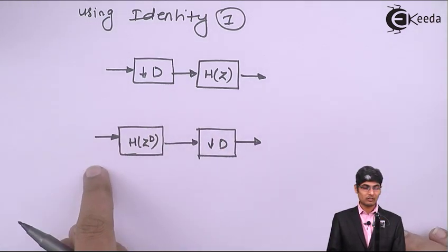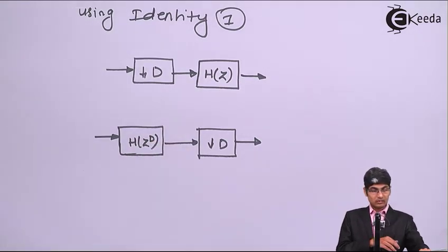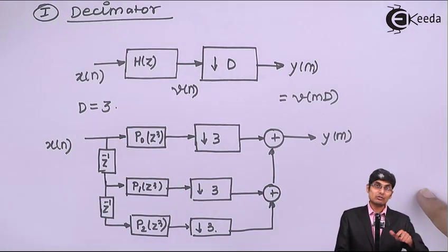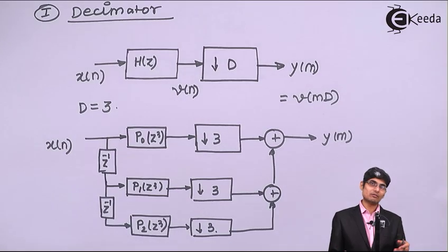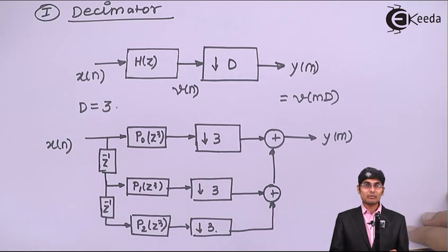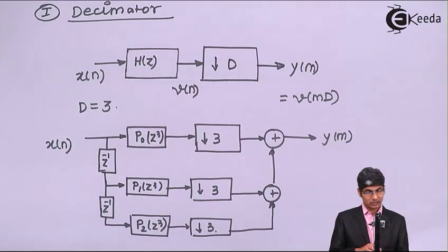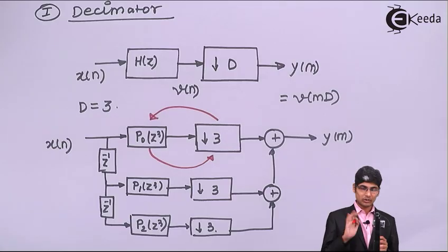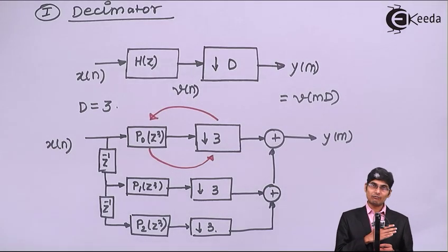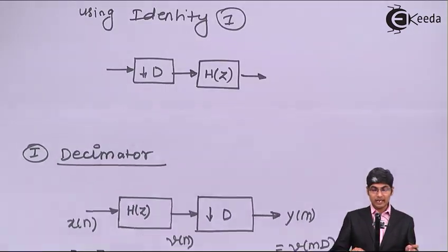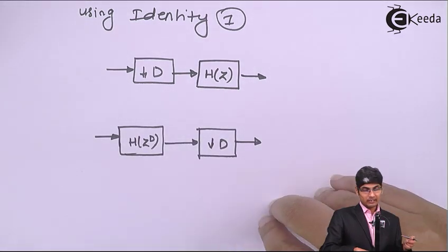Our case has H(z^D) followed by down-sampled by D. The polyphase components P₀, P₁, P₂ correspond to z³ which corresponds to H₁(z), H₂(z), H₃(z) that combinedly correspond to H(z). Each filter represents H(z^D), so I will interchange — bringing the decimators to one side and taking the filters to the other side. My all decimator factors will come first, then all filters, and the filter should now only be H(z), giving a more efficient structure.